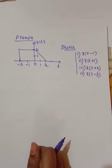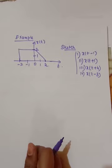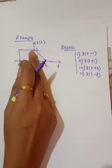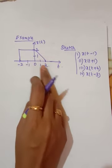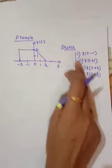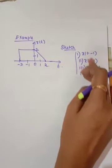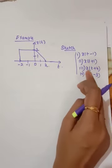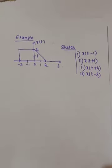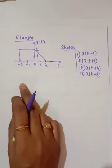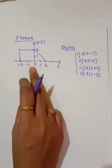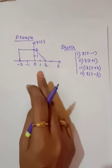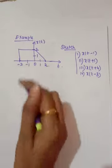Now we will see the time shifting operation using a simple example. Consider the signal x(t): from -2 to 0 it has the value 2, and from 0 to 2 it has a slope. We need to find x(t - 1), x(t + 1), x(t + 4), and x(t - 3). The first step is to write the mathematical expression from the graphical representation. This shifting can be done in two methods.